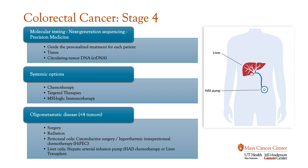For stage four colorectal cancer, it's more complex. We need to do additional testing to personalize treatment for each patient, including looking at targets on the tissue or biopsies or in the blood — called circulating tumor DNA. This is called molecular testing, next generation sequencing, or precision medicine, and it's typically done when someone has stage four colon cancer. Options for systemic treatments include chemotherapy, targeted therapies, and in certain cases when there's a marker called MSI-high, we offer immunotherapy upfront.